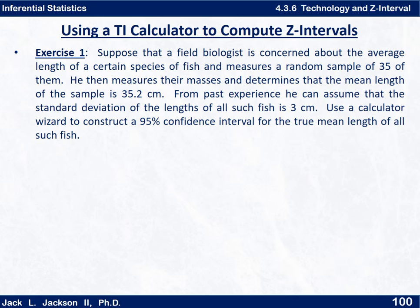Suppose that a field biologist is concerned about the average length of a certain species of fish and measures a random sample of 35 of them. He then measures their masses and determines that the mean length of the sample is 35.2 centimeters. From past experience he can assume that the standard deviation of the lengths of all such fish is 3 centimeters. Use a calculator wizard to construct a 95% confidence interval for the true mean length of all such fish. Do this one on your own. Come back and check your answer when you're done. Press pause now.